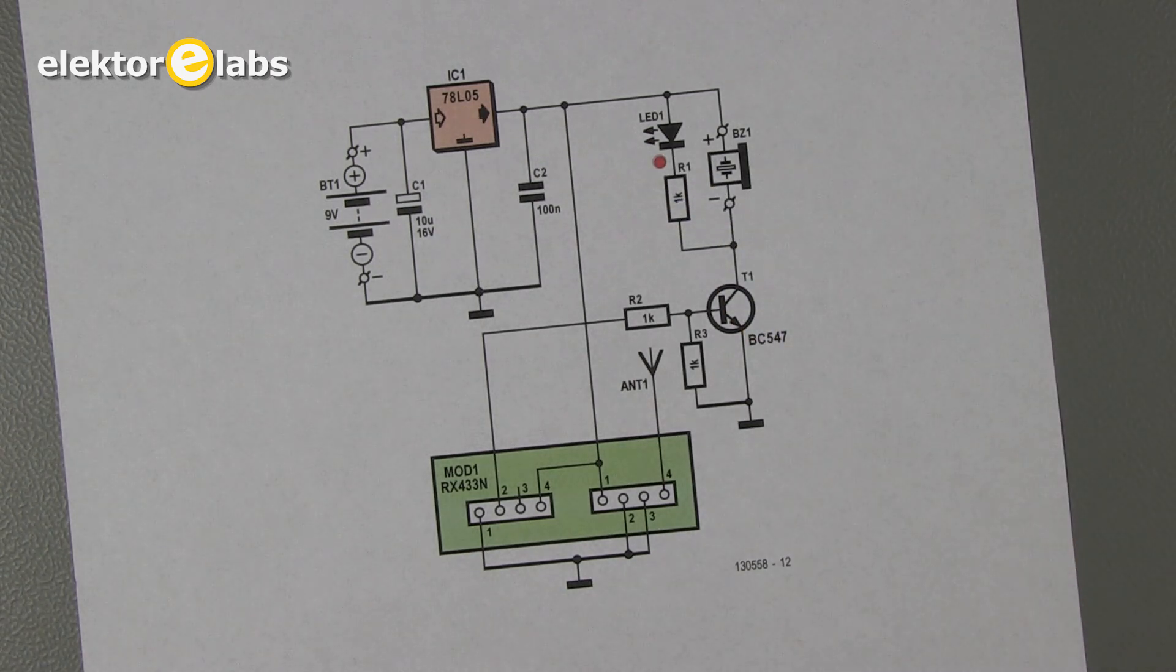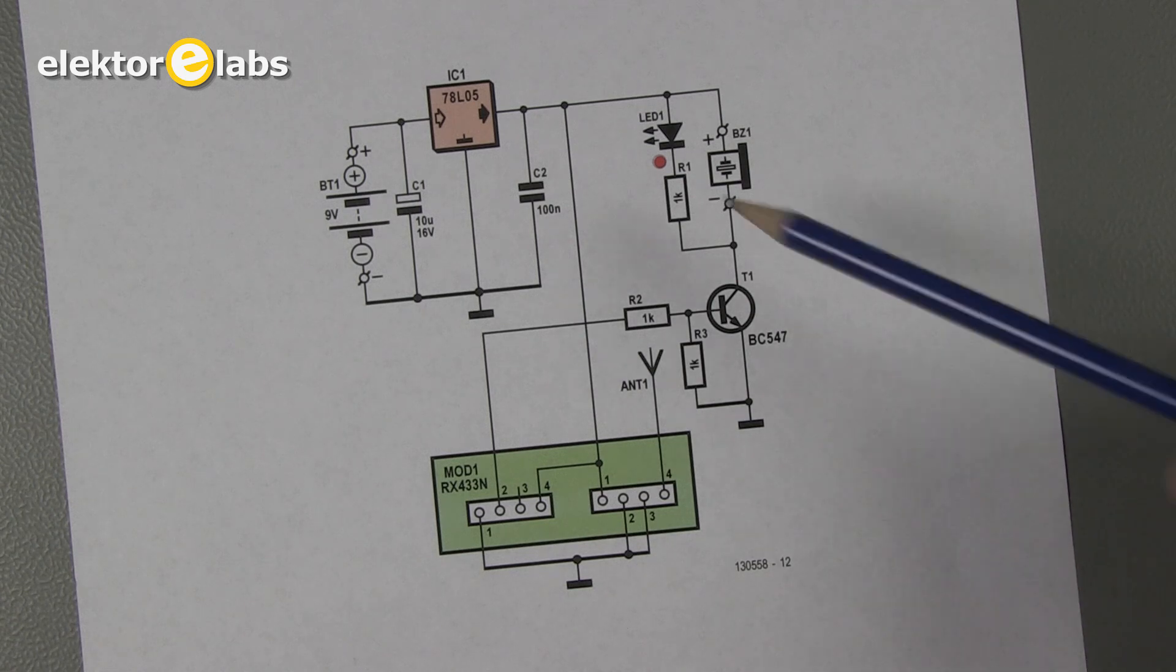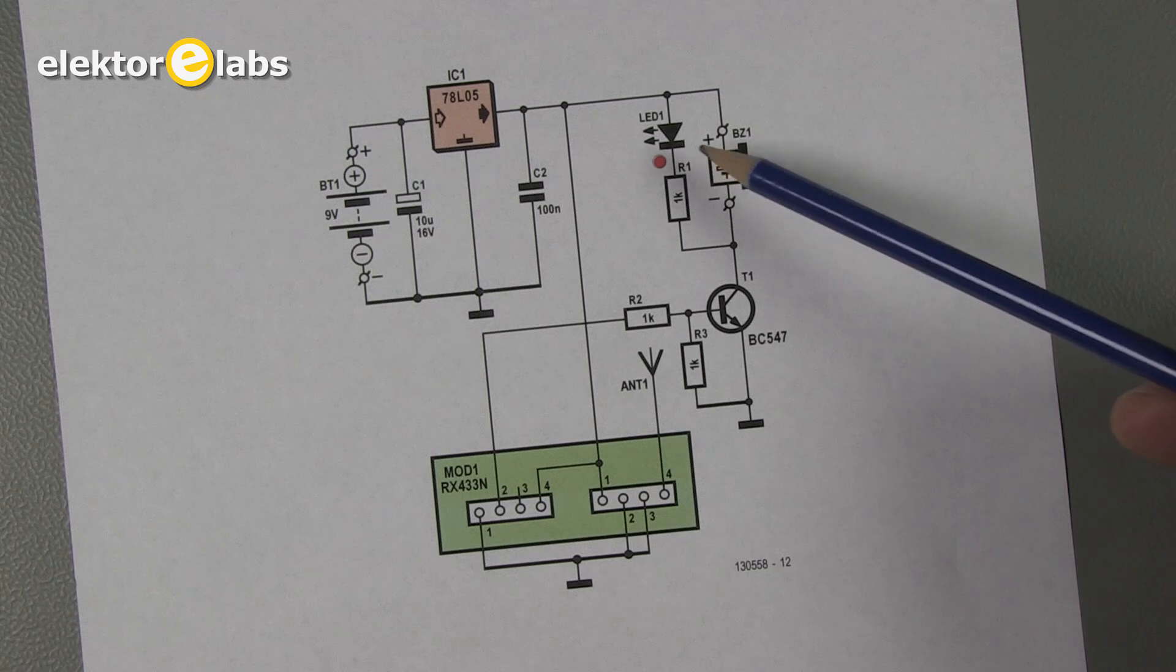When the receiver module detects the carrier wave, the transistor will be switched on and the LED will flash and the buzzer will sound at the 1 Hz rhythm.